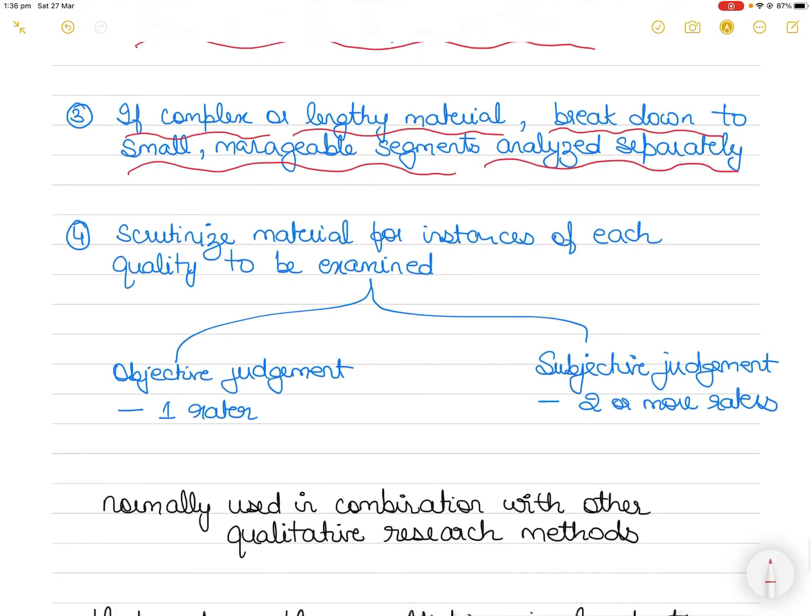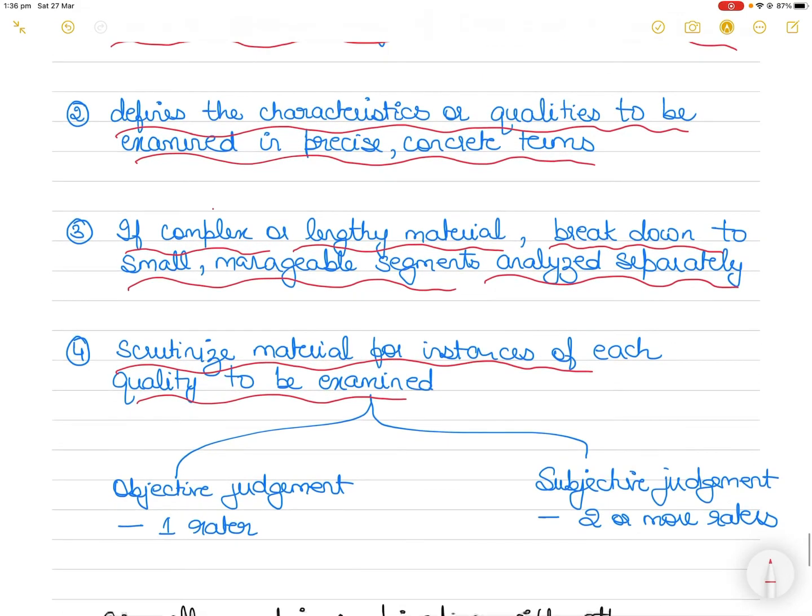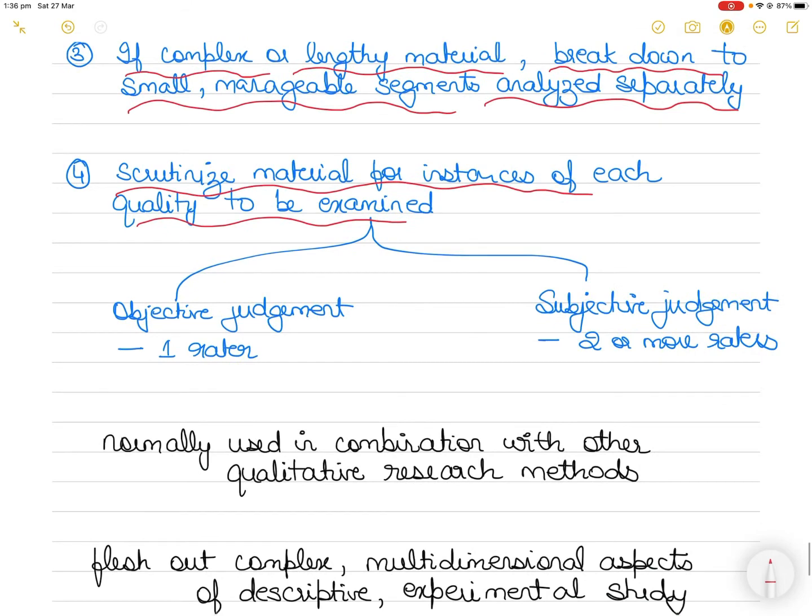Number four, the researcher will scrutinize the material for instances of each characteristic or quality. When judgments are more objective, for instance when the study involves looking for the appearance of certain words in a text, only one judge or rater is necessary.